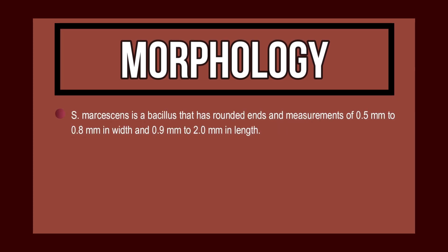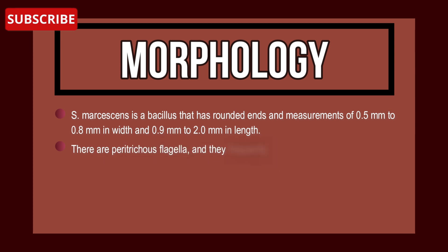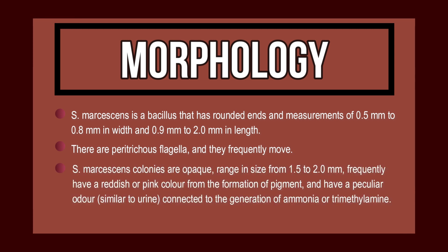Let's dive into the morphology. It is a bacillus with rounded ends, measuring 0.5–0.8 mm in width and 0.9–2.0 mm in length. They have peritrichous flagella and are frequently motile. Serratia marcescens colonies are opaque, ranging in size from 1.5 to 2.0 mm.